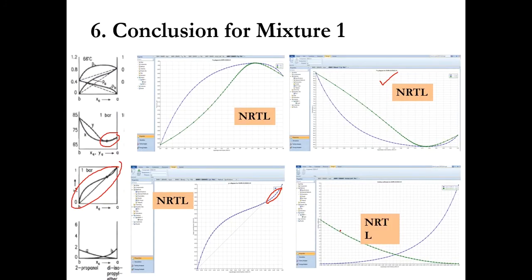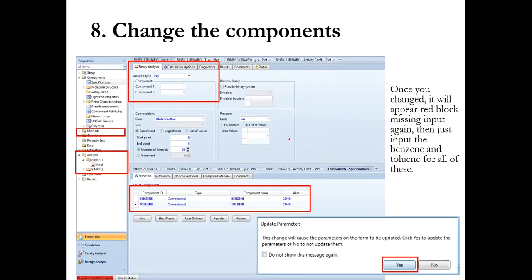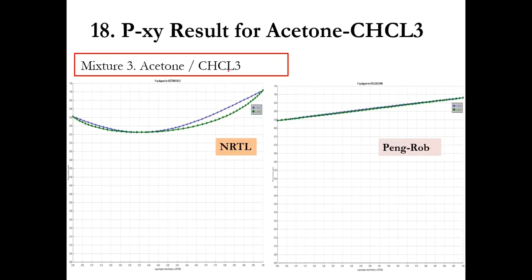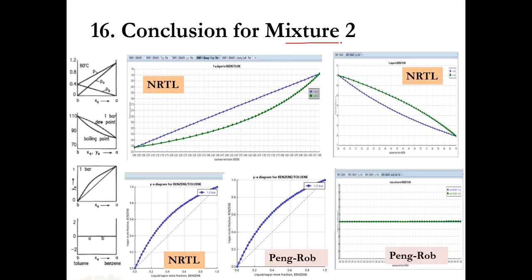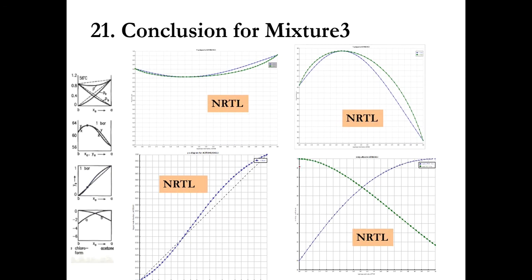So this means that the NRTL property package is the best suited to explain the TXY, PXY, YX, and activity coefficient trends for the mixture of isopropyl alcohol and diisopropyl ether. The next mixtures for you to analyze are benzene-toluene and acetone-chloroform. You will need to draw the diagrams and determine which property package is best suited for each. Overall, NRTL is the best-suited property package across these cases. Thank you.